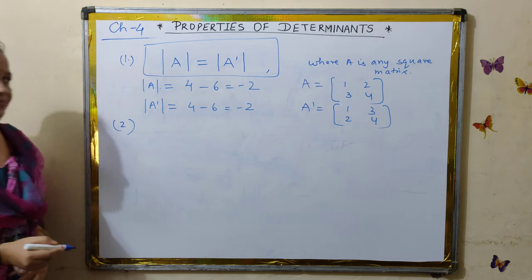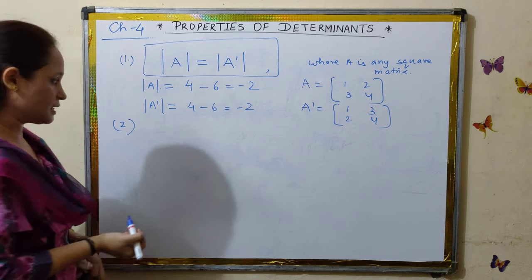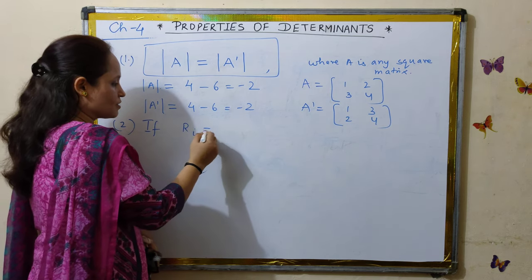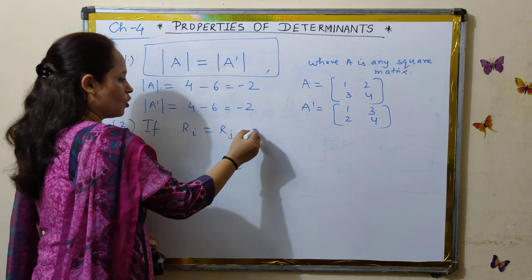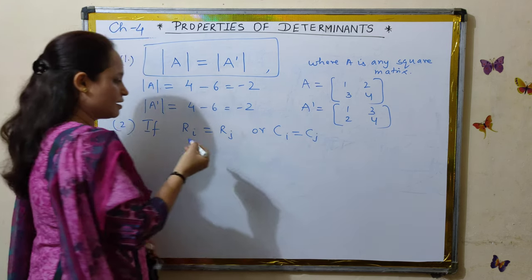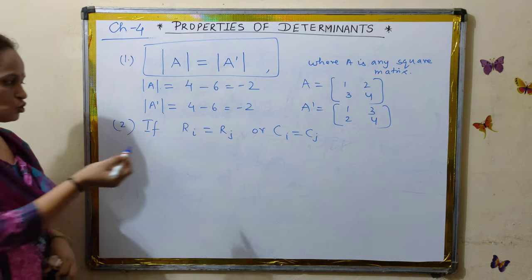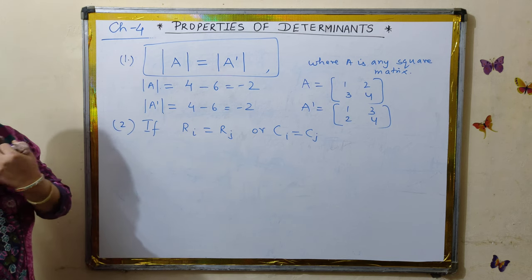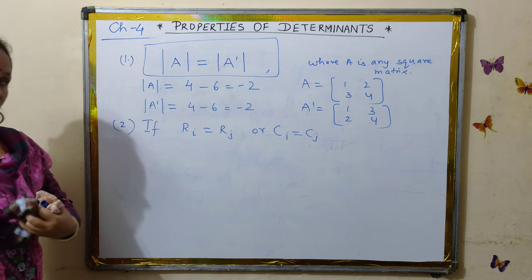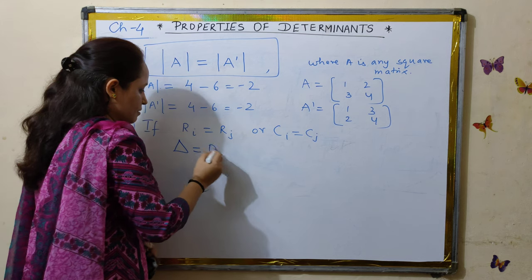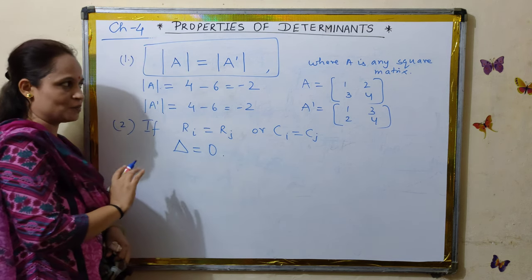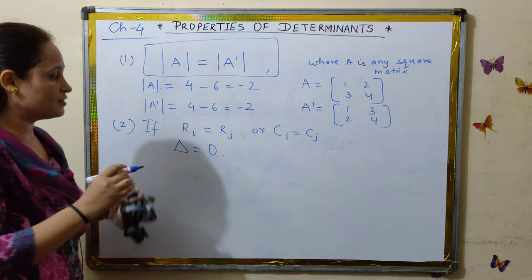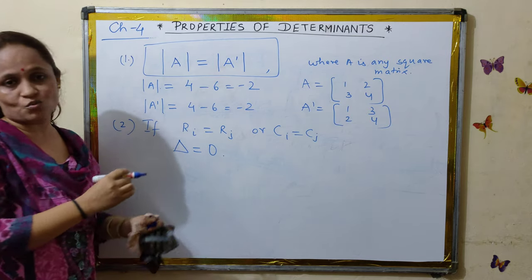Now the second property: if in a determinant any two rows are equal, or any two columns are equal — where Ri and Rj denote any two rows — then the value of the determinant is 0. All these properties are important because each has significance when solving problems. If we find two rows or two columns are identical, we can immediately say the determinant is 0.